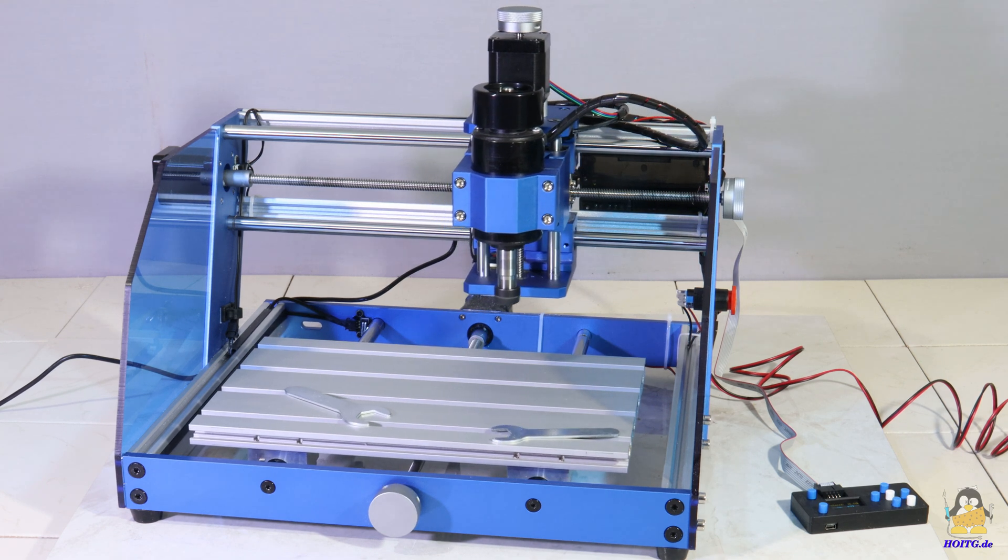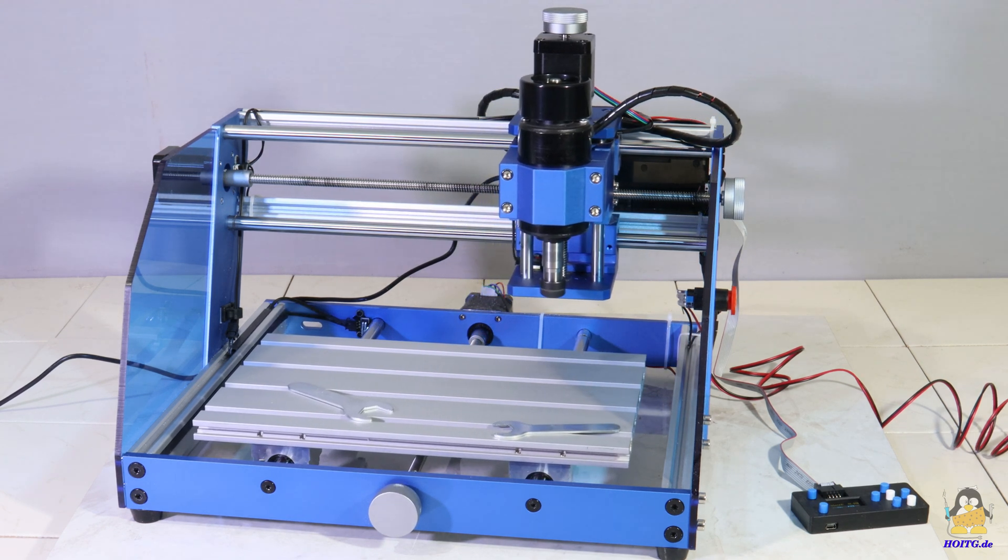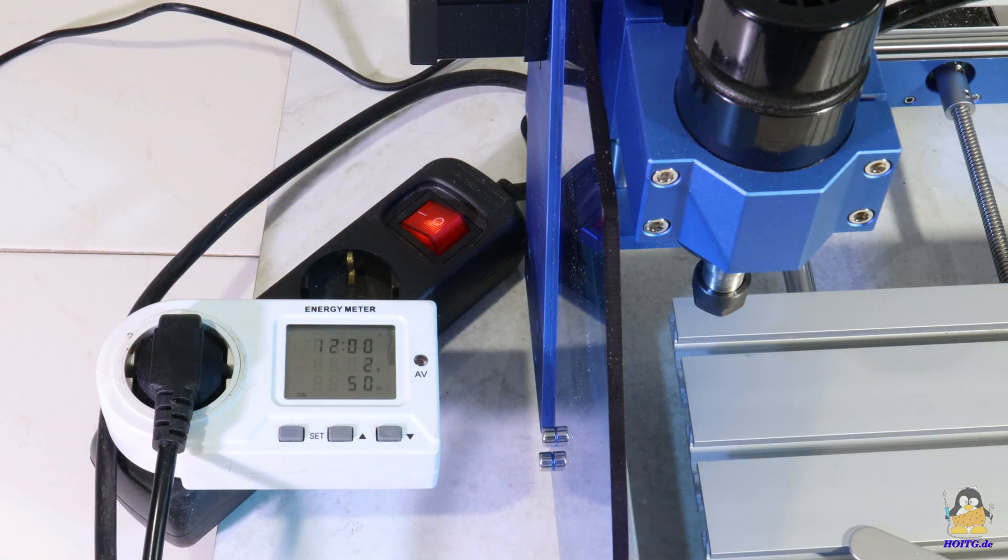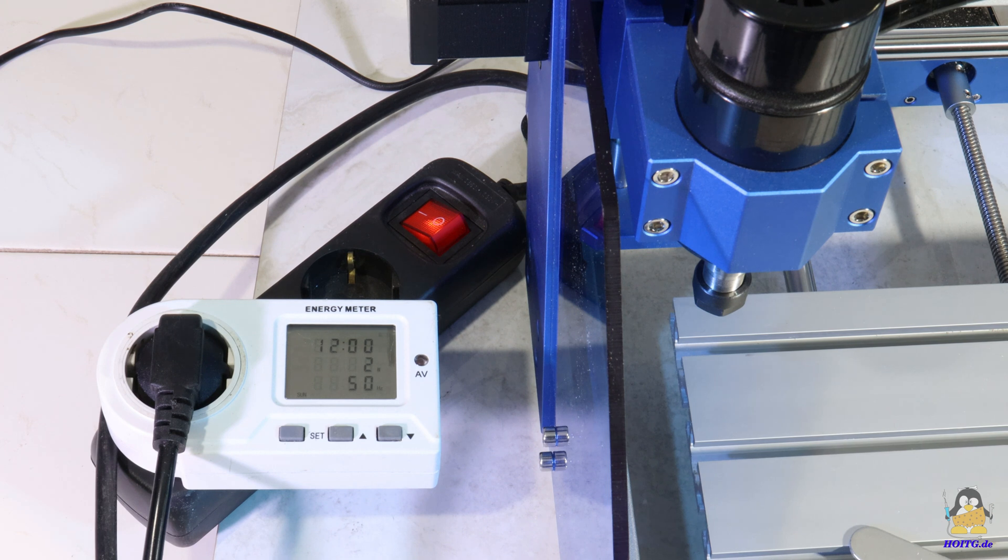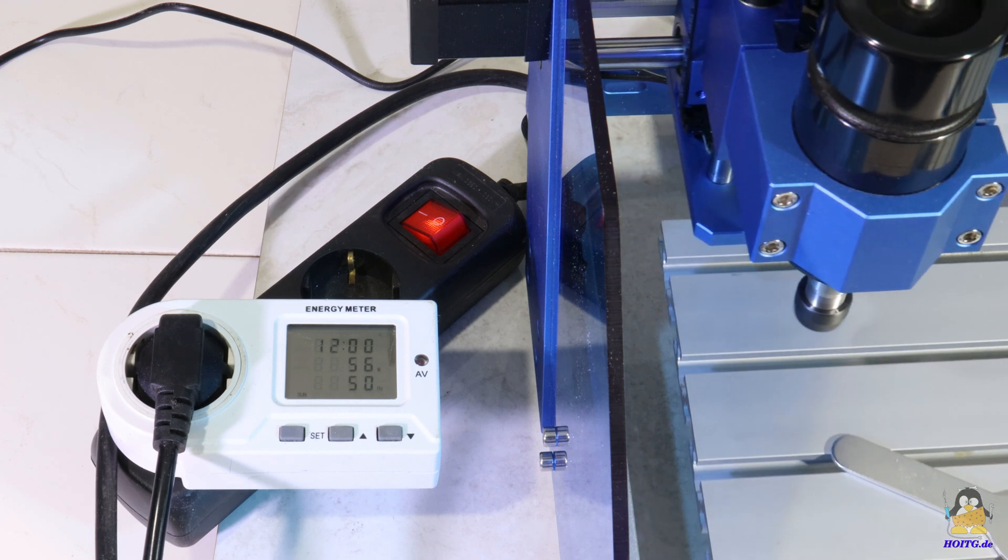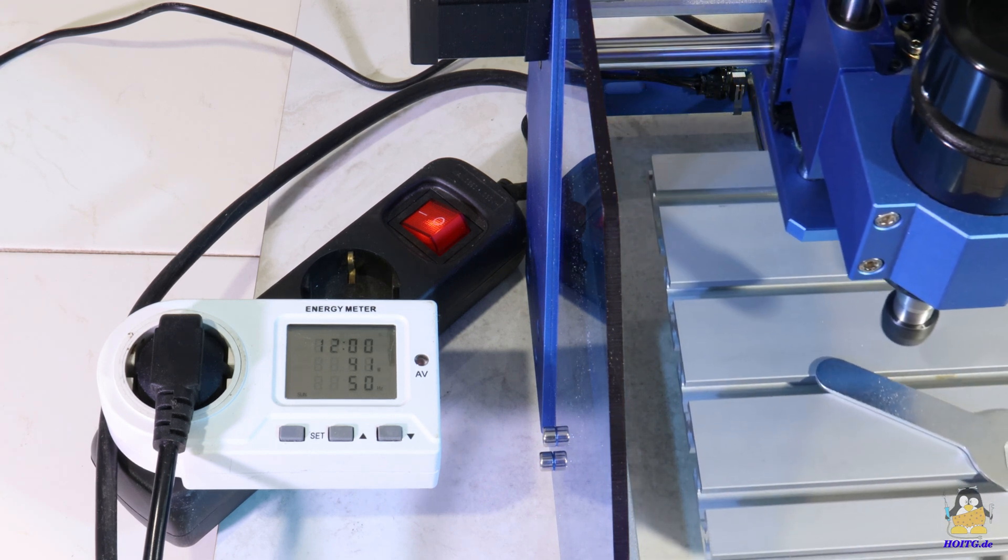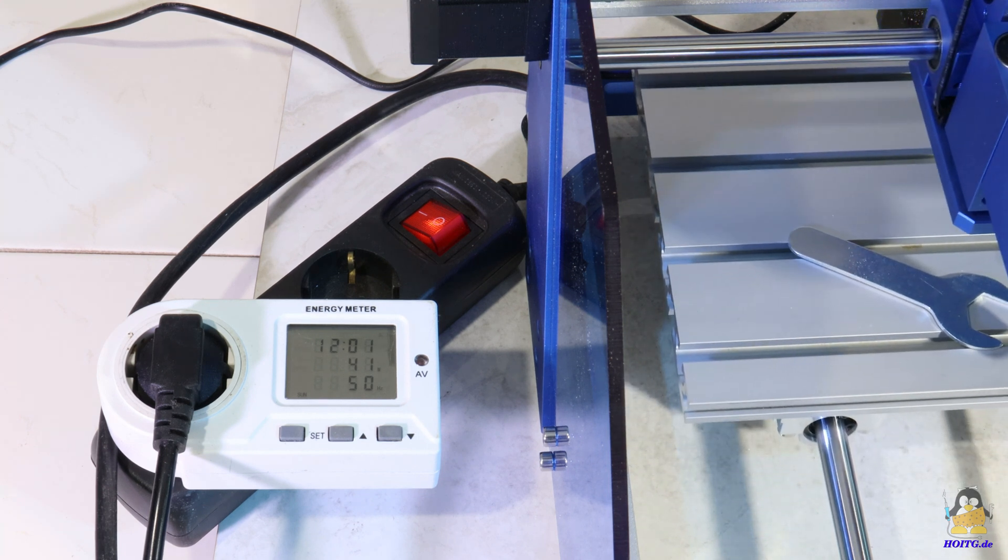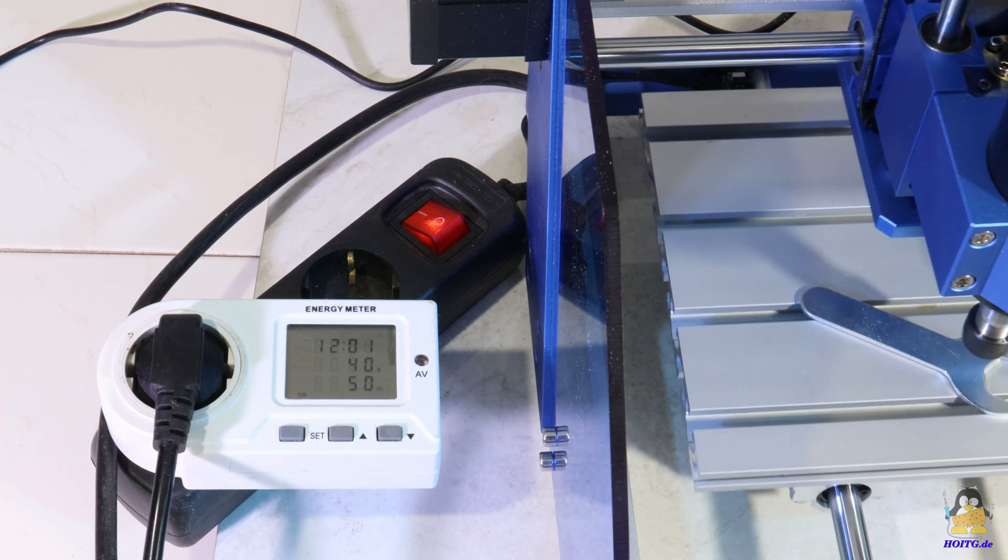All motors stop immediately when the emergency switch is triggered. In standby mode with all motors switched off, the Pro Max consumes between 2 and 3 watts. With all motors in operation, the input power rises to just over 40 watts, while the milling motor is switched on, it is briefly over 50 watts for a couple of seconds.